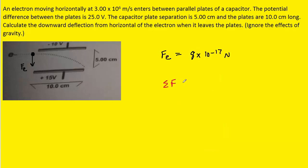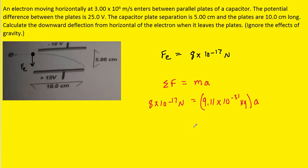Newton's second law tells us that if there is a net force on an object, we can set that equal to the mass times the acceleration. The net force on the electron is 8×10⁻¹⁷ newtons. The mass of the electron is 9.11×10⁻³¹ kilograms. Dividing both sides by the mass, the acceleration is approximately 8.78×10¹³ meters per second squared — the acceleration acting on the electron as it travels between the plates.